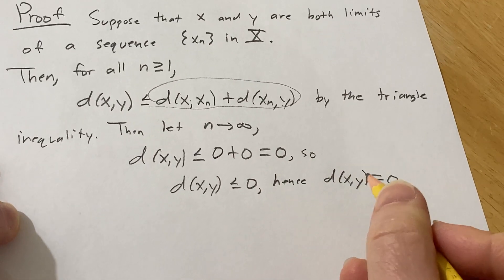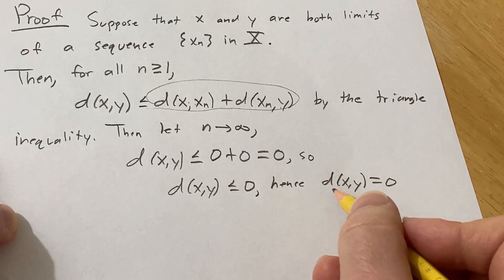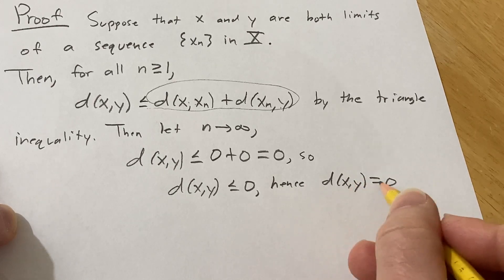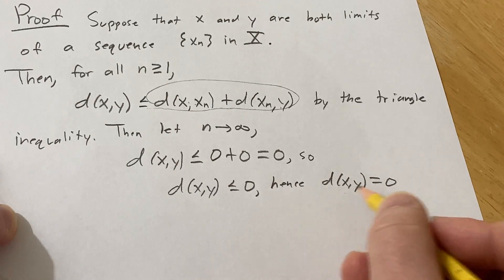But one of the properties of a metric space says that the metric satisfies the following condition. This is going to be true if and only if x is equal to y.